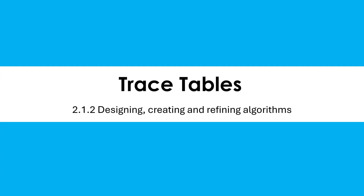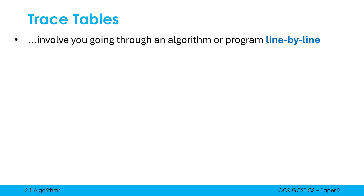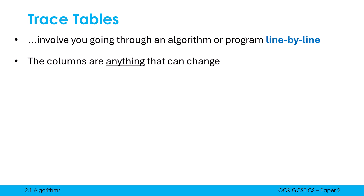We're going to look at trace tables in this video, which can catch people out in paper two. They're not always a student's favorite thing to face, but they are very doable once you have some practice. What does a trace table involve? It involves going through either an algorithm or a program line by line — you're almost pretending like you are the computer, following the code or flowchart step by step. It's a table, so it has columns.